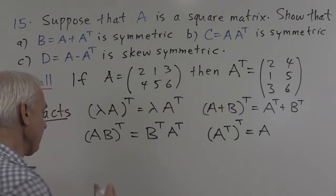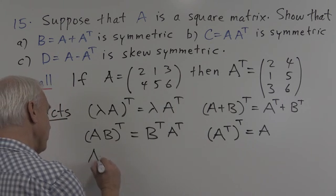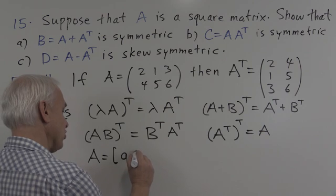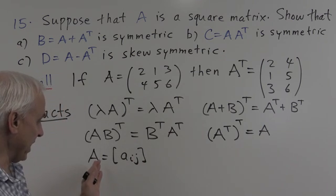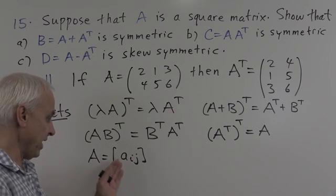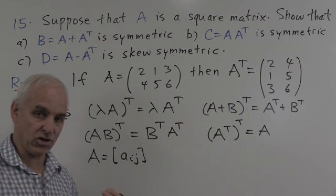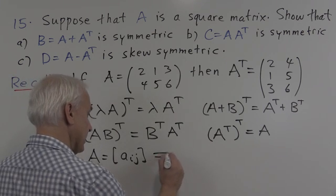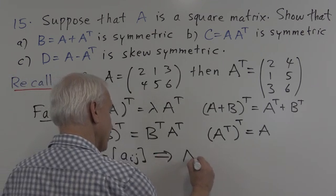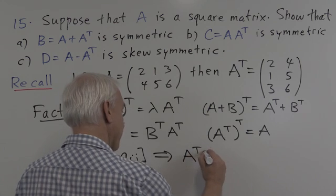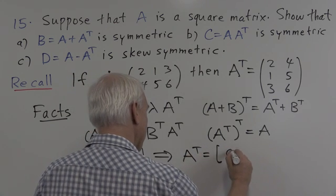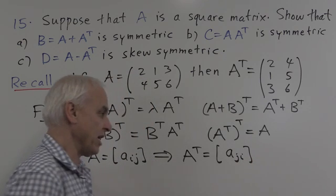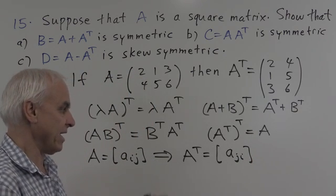In terms of notation, sometimes we write a matrix in terms of its entries — A equals the matrix whose (i,j)th entry is a_ij. In that case, the transpose can be written as the matrix whose (i,j)th entry is a_ji.